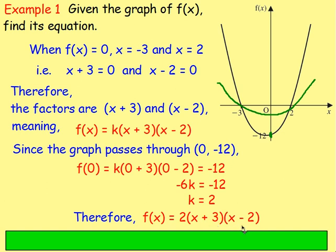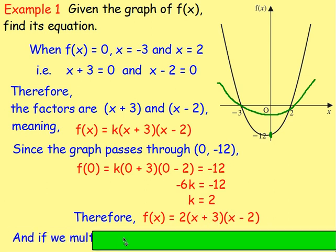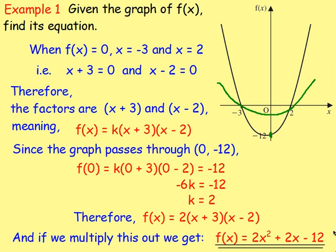You could also take that a stage further and multiply out the brackets. Multiply x times x, 3 times x — multiply it all out and then multiply every term by 2. You'll end up with f of x equals 2x squared plus 2x minus 12. Just multiply that out the way you have been doing for years.